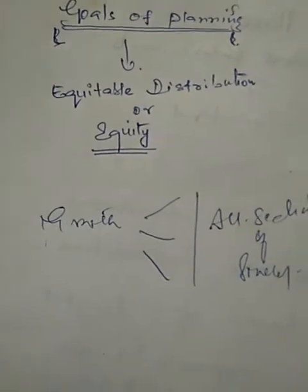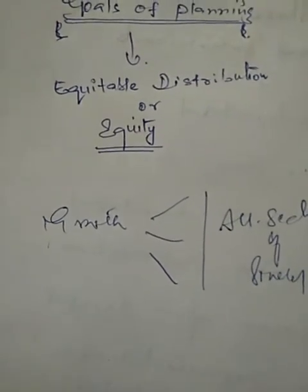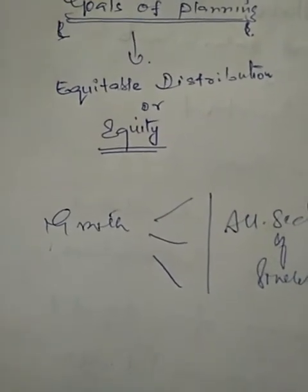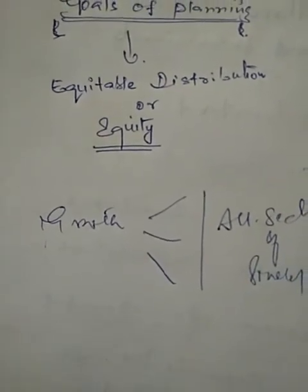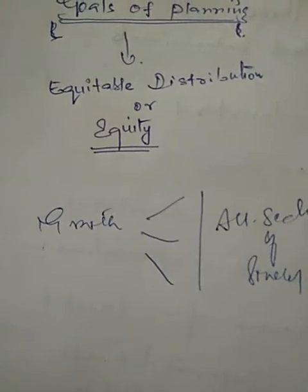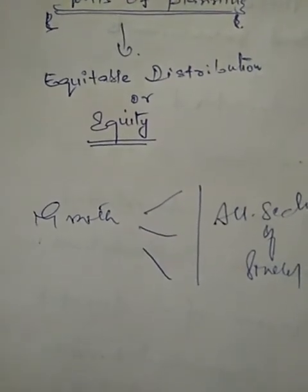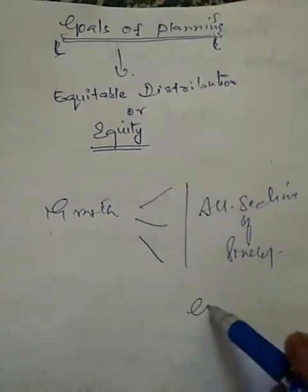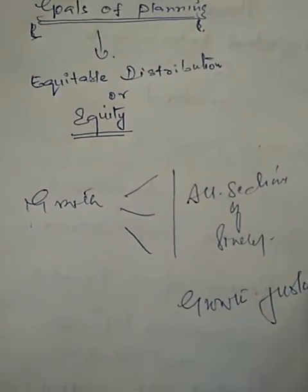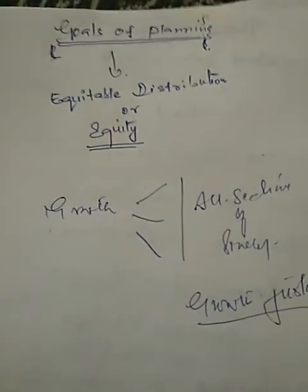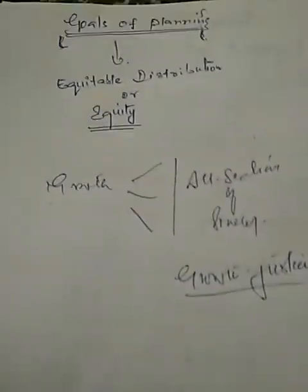Then this growth becomes meaningful when the distribution of income becomes equitable. We simply call it equitable distribution or growth with justice - economic justice.